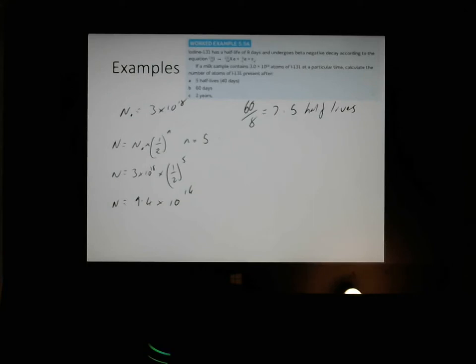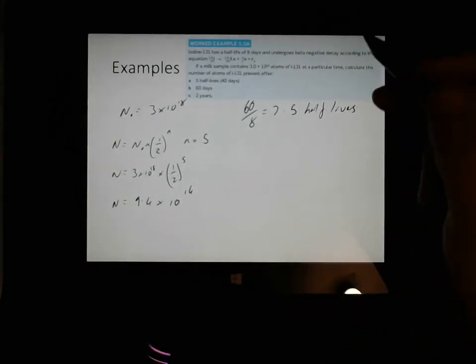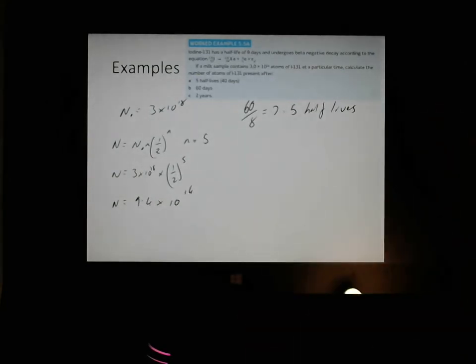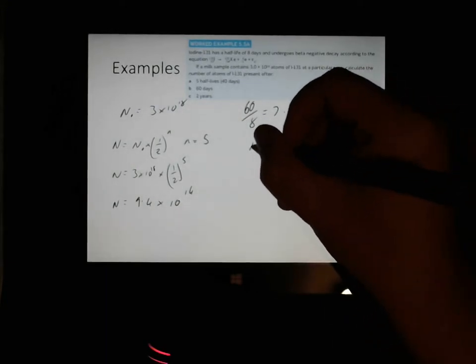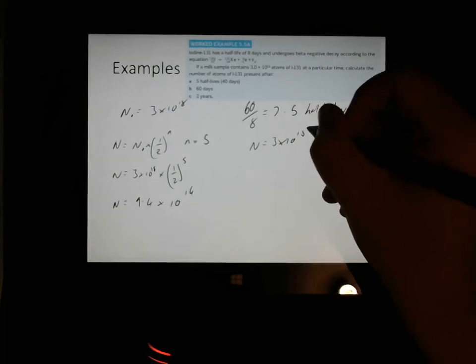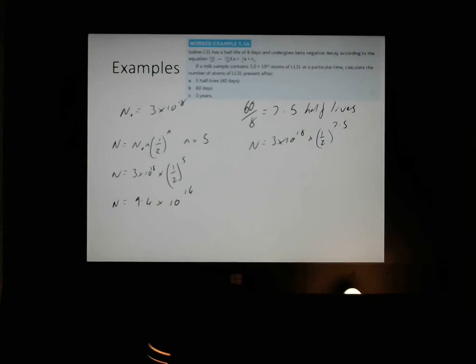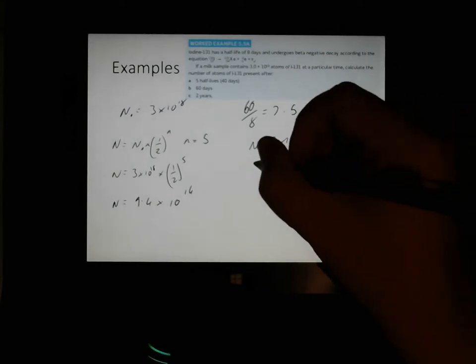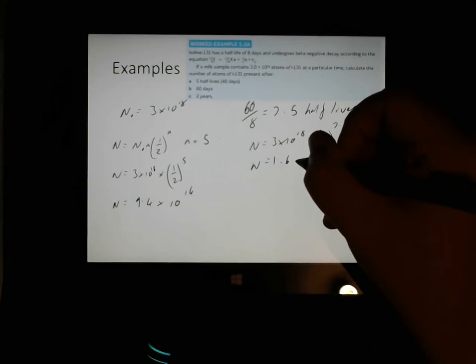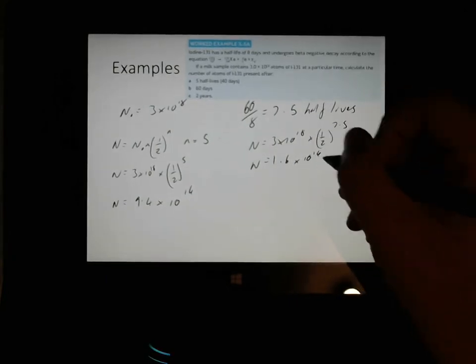Now that's not a whole number of half-lives, which is not in the syllabus. So we're going to do this anyway, but you need to be aware that sometimes, I think for this, the text is a little bit more wanting to go a bit further because it's what we've done in the previous syllabus. But now that we've got that, we can plug that into it. Note though that I can't do 7.5 halves very easily. I'd have to actually do a half to the power of 7.5. So n equals 3 times 10 to the 18 times a half to the power of 7.5. 3 times 10 to the 18 times 0.5 to the power of 7.5 gives me 1.6 times 10 to the 16.